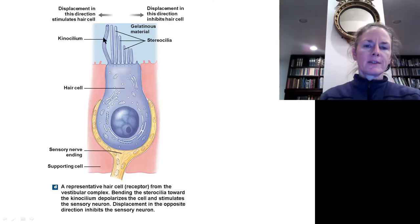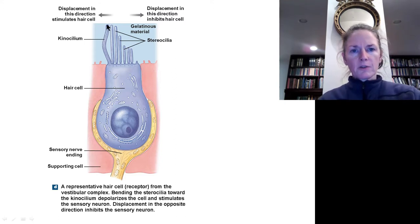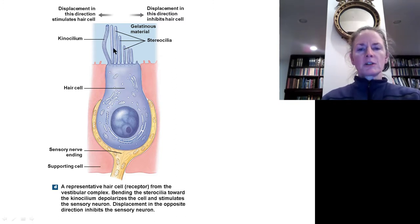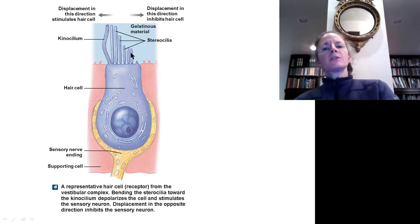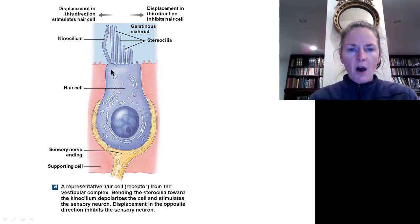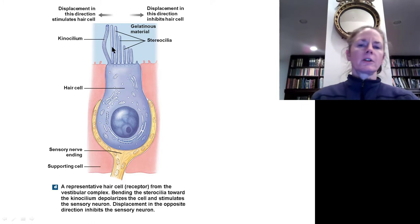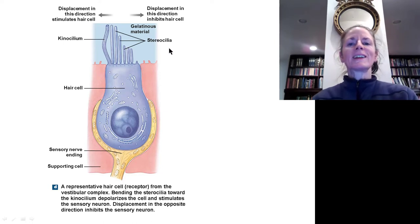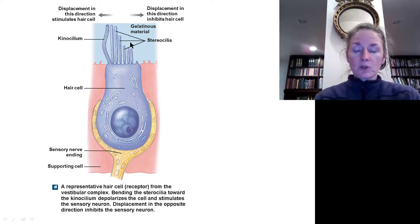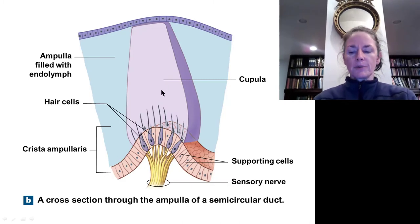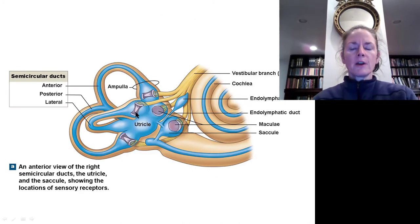Here is a representation of a hair cell. The kinocilium is an actual cilium with a microtubule structure, and is taller than the stereocilia, which are specialized microvilli. As the stereocilia bend toward the kinocilium, they depolarize the cell and increase neurotransmitter release. If they bend away, they hyperpolarize the cell and decrease neurotransmitter release. The cupula orientation in each canal is at right angles, allowing registration of rotation in all three planes.